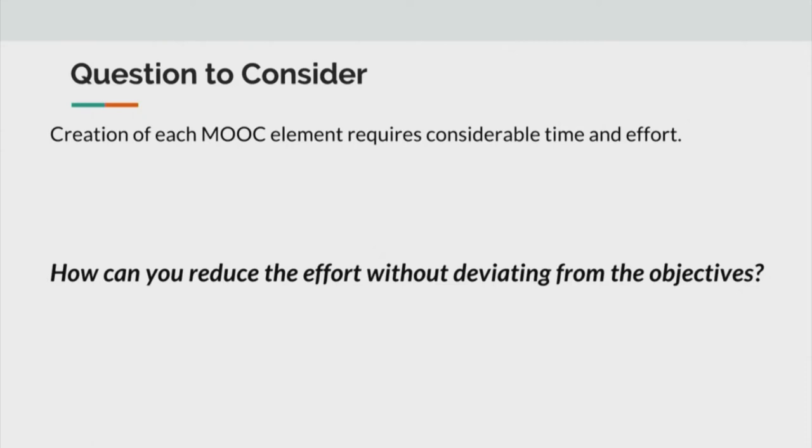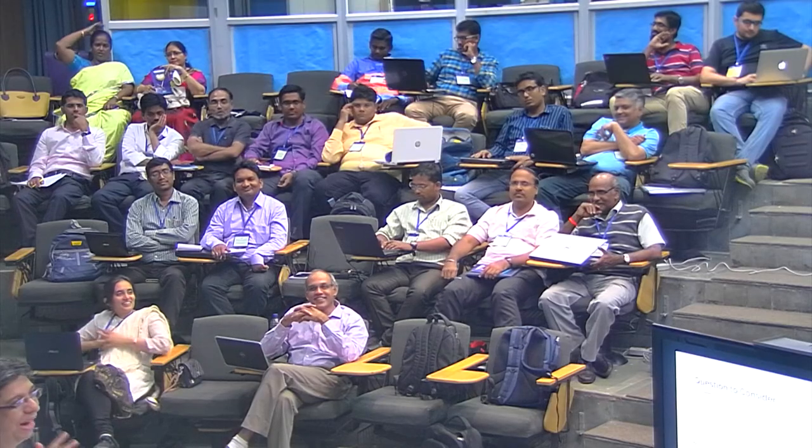One way is to talk to such people and figure out newer ways of reducing the effort. Is there any other way of reducing this effort without deviating from the objective? Such collaboration is one definite solution. But collaboration will not reduce the 1000 hours - it will only get reduced for yourself. Each of you may have to put in 200, but the total number of effort hours is not reducing.